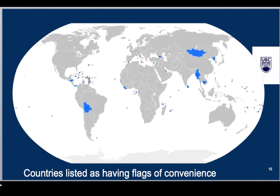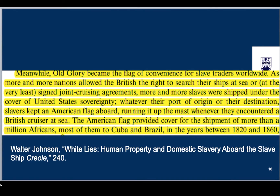In the 19th century, after the U.S. and Britain formally abolished the slave trade in 1808, U.S. ships often flew U.S. flags. According to historian William Walter Johnson, Old Glory became the flag of convenience for slave traders worldwide. As more and more nations allowed the British the right to search their ships at sea, or at least signed joint cruising agreements, more and more enslaved people were shipped under the cover of United States sovereignty. Whatever their port of origin or destination, slave traders kept an American flag aboard, running it up the mast whenever they encountered a British cruiser at sea. So we see how Old Glory as the flag of convenience allowed the illegal slave trade to continue.